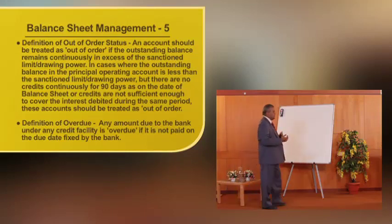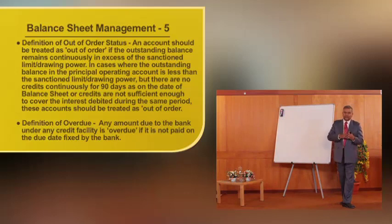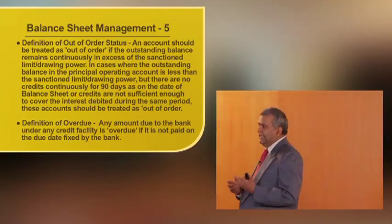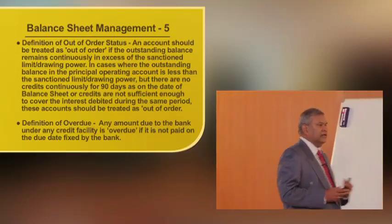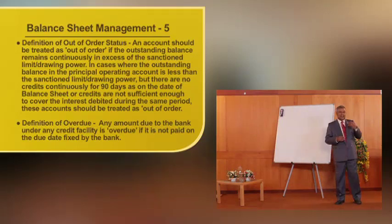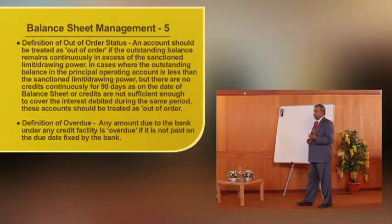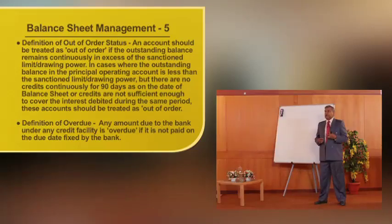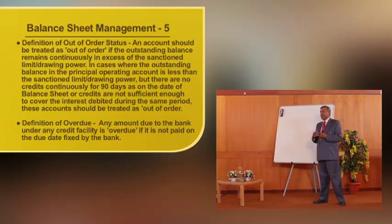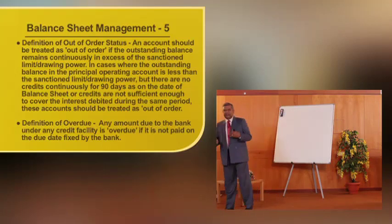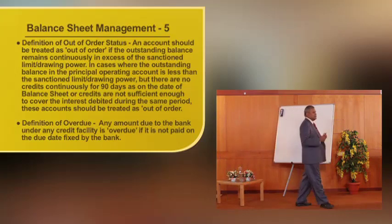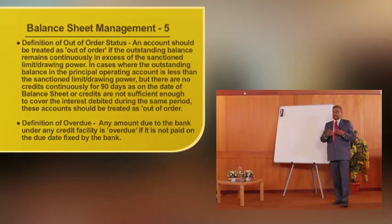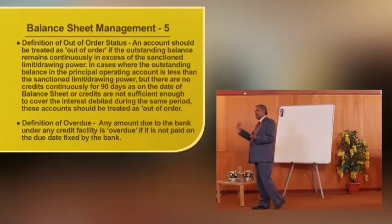There is one more scenario: if the outstanding is 90 crores, interest debited is 2 crores, and the borrower services only 1 crore 50 lakhs in 90 days — which is not sufficient to cover the interest of 2 crores — this account becomes NPA on the 91st day. Any amount due to the bank under any credit facility is overdue if it is not paid on the due date fixed by the bank.